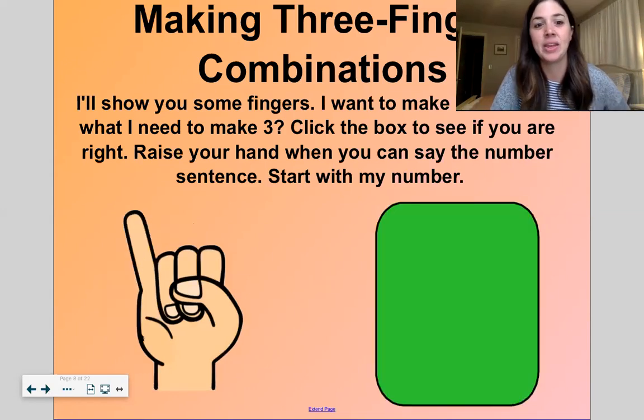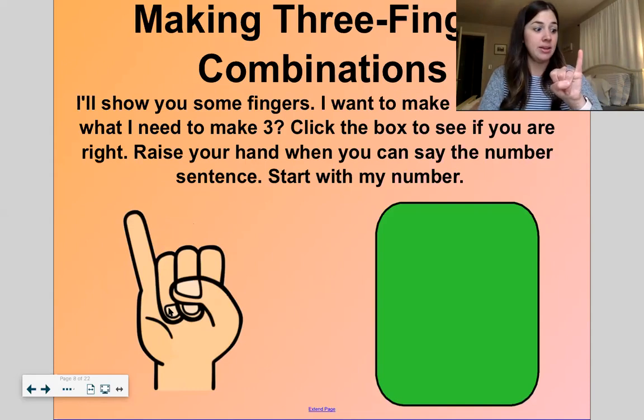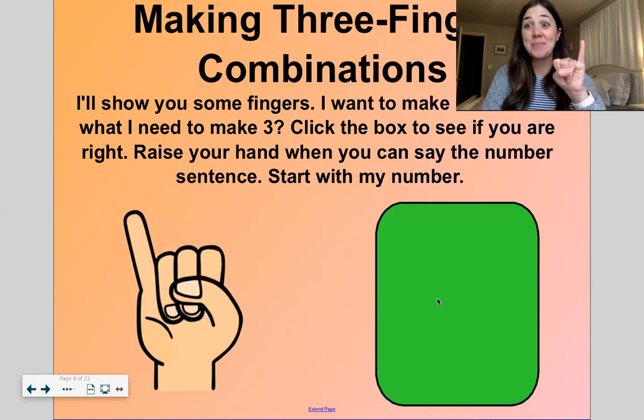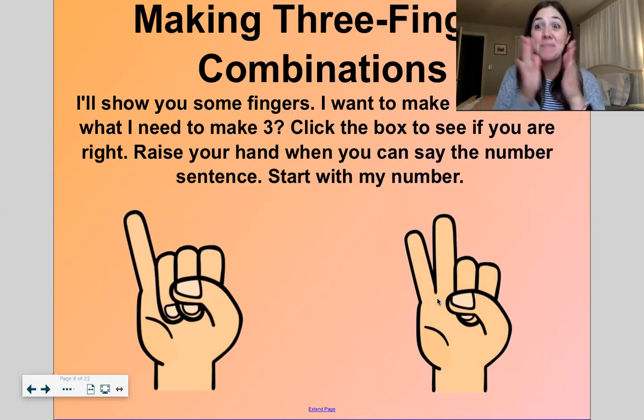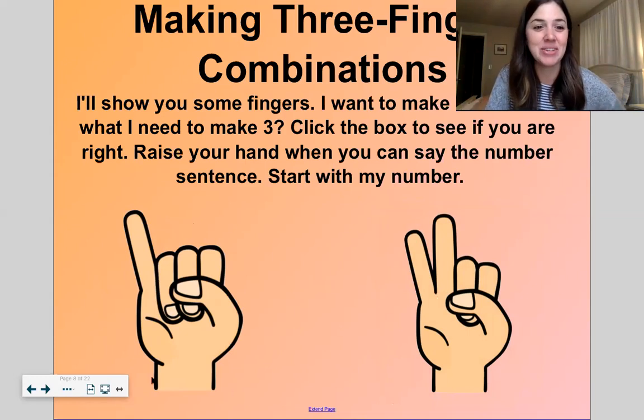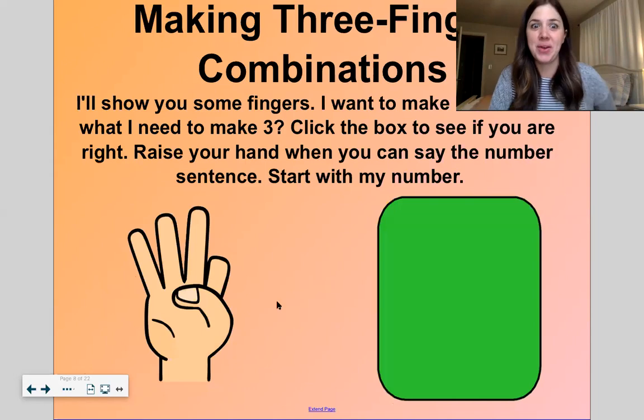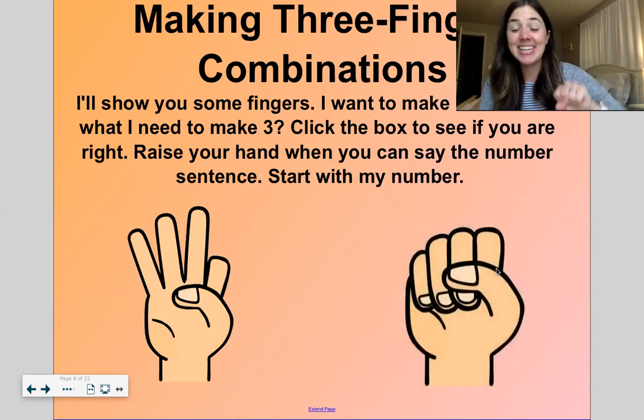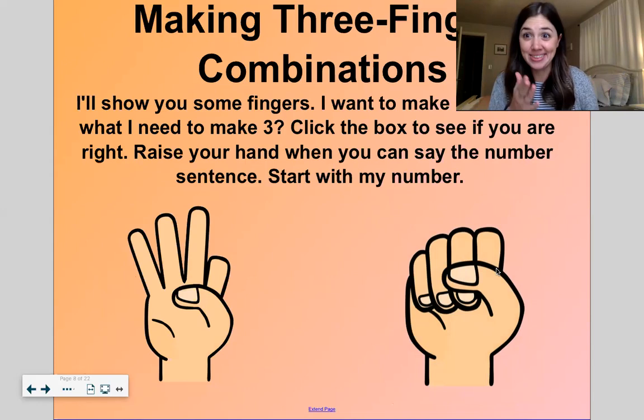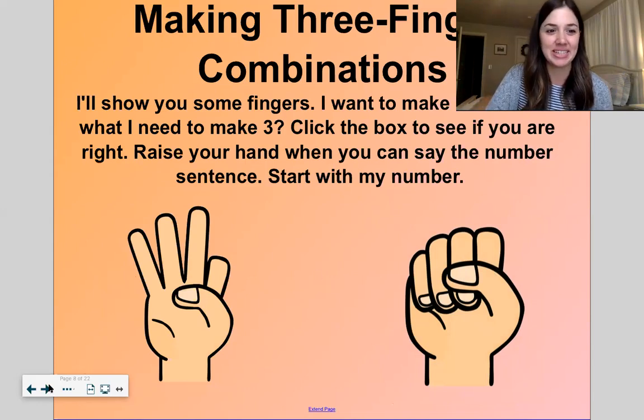Okay, let's do another one. Okay, here we have one. How many more do we need to make three? Two. Yes. One and two make three. That's our number sentence. Okay, here we have three. How many do we need to make three now? Zero. Yes. Three and zero make three. That's our number sentence.